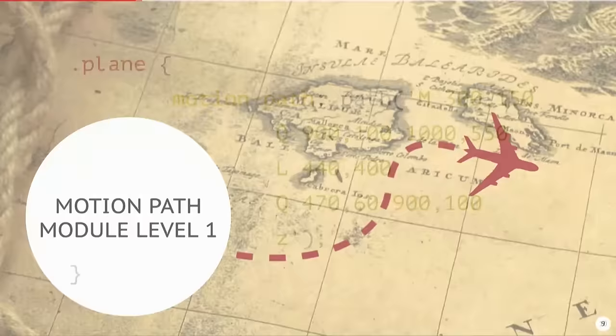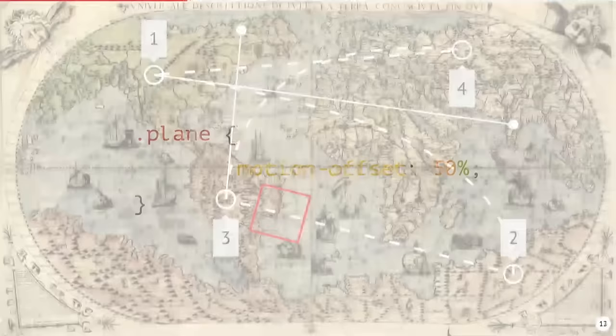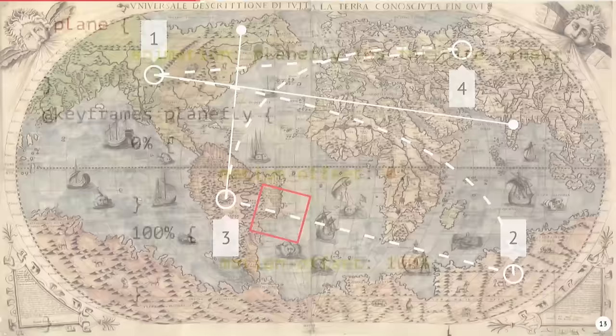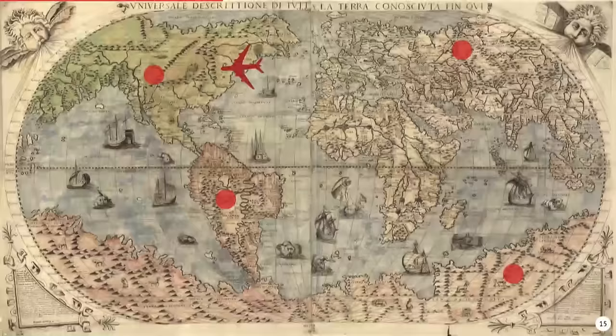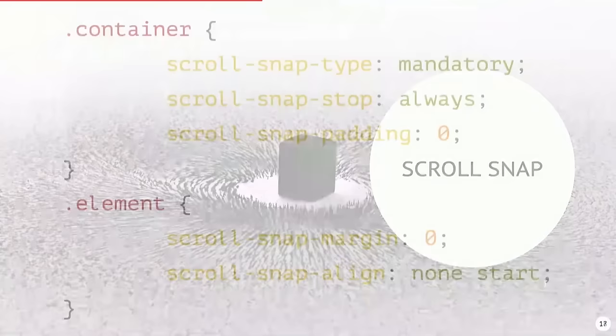So let's just get to the point. Have you heard about the motion path model? You may put some element on a path, set its position, and even animate it. You may use it for a landing page or perhaps for advertisement — you name it. It's supported in Blink.